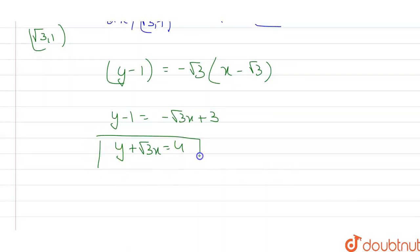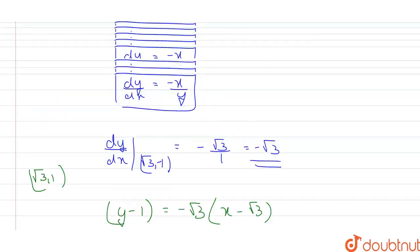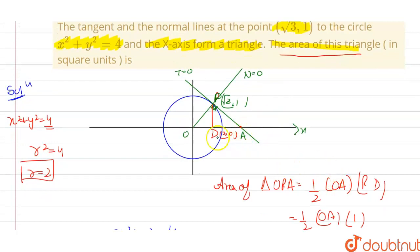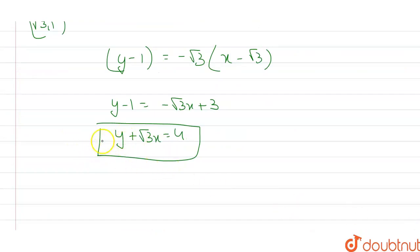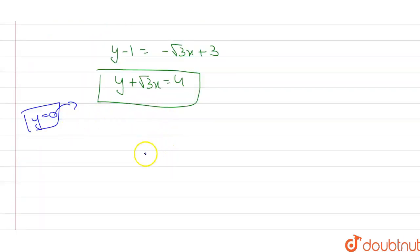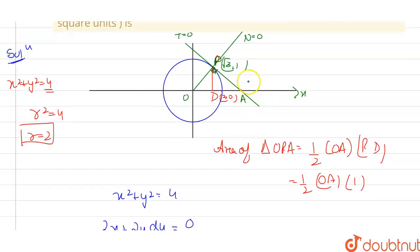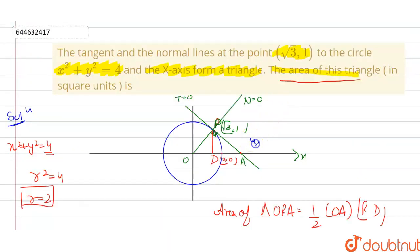To find point A (the x-intercept of the tangent), I set y = 0 in the tangent equation y + √3x = 4. This gives √3x = 4, so x = 4/√3. Therefore, the coordinate of point A is (4/√3, 0), and the distance OA = 4/√3.